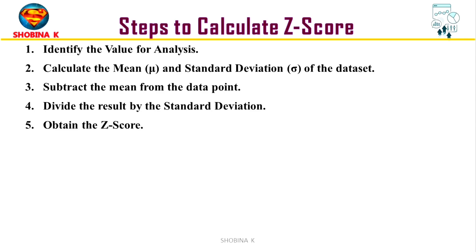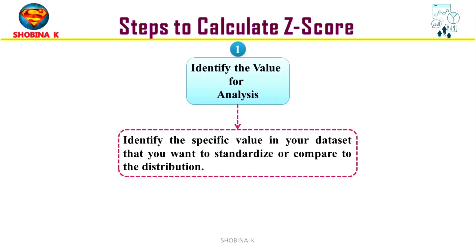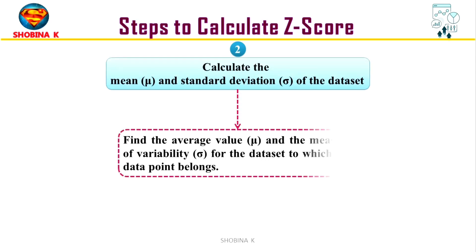Let's break down these steps. First, identify the value for analysis — that is, identify the value you want to standardize or compare to a distribution. We choose a specific value from the data set that we want to assess or analyze using the z-score. This particular value is referred to as the data point of interest. Second, calculate the mean and standard deviation of the data set — find the average value mu and standard deviation sigma for the entire data set that the data point belongs to.